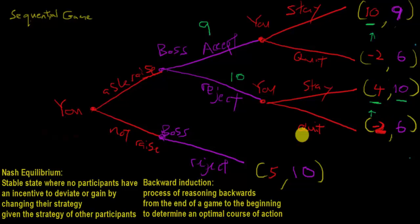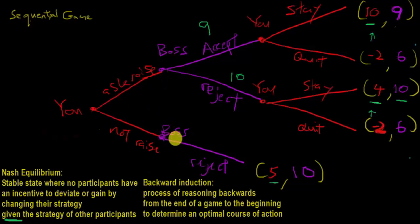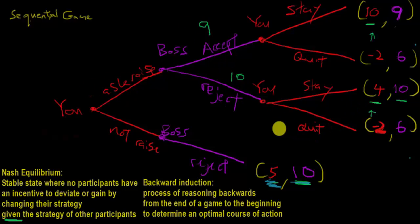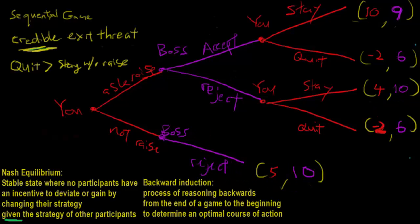Knowing your boss will always choose to reject, we reason all the way back: 5 is higher than 4, so you will never choose to ask for a raise in the first place — you will stay silent. And given your strategic choice, your boss would simply reject anyway. This is the Nash equilibrium: given that your boss always rejects when you ask, you prefer not to ask; and given that you won't ask, your boss stays silent too.